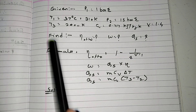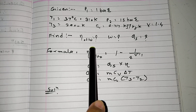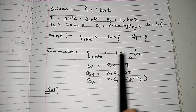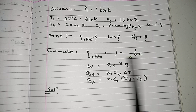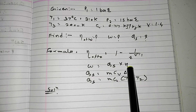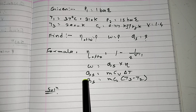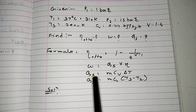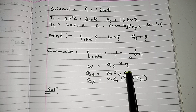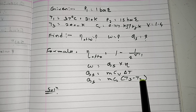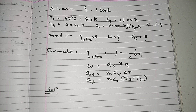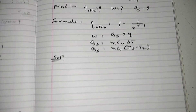Let's set up the solution. We need to find: efficiency of the Otto cycle using formula 1 minus 1 upon r raised to gamma minus 1; work done = heat supplied times efficiency; heat supplied = M × CV × ΔT. Since CV is given and T3 is given, but T2 is unknown, we will first find T2.